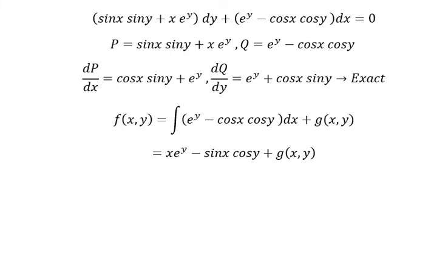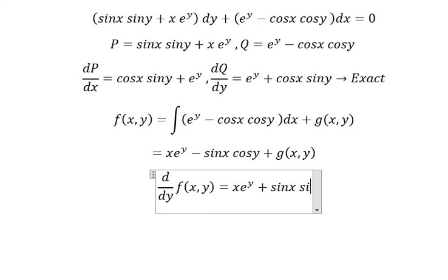Next, we need to compute the partial derivative of f with respect to y. The derivative of xe^y is xe^y. The derivative of minus sinx cosy is sinx siny. So we have xe^y plus sinx siny.